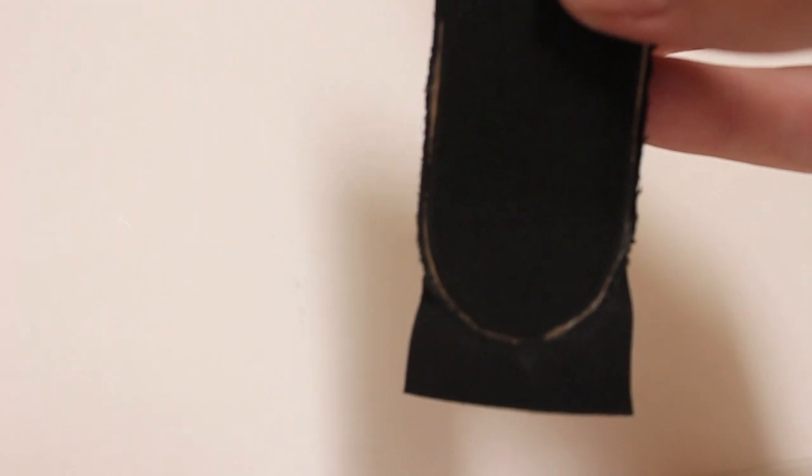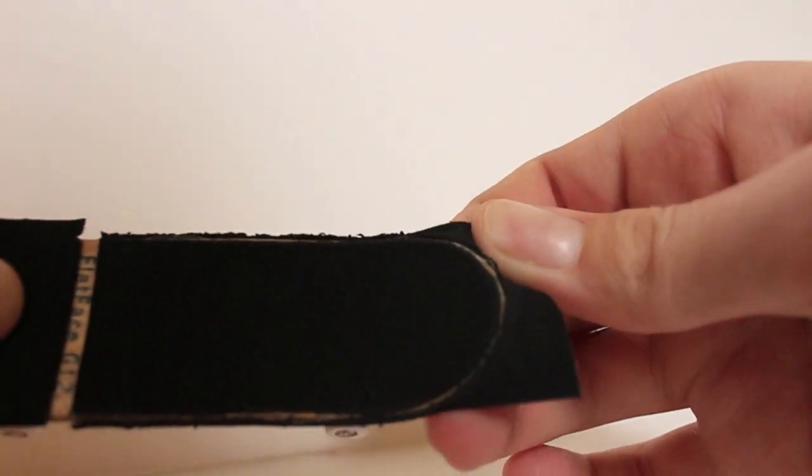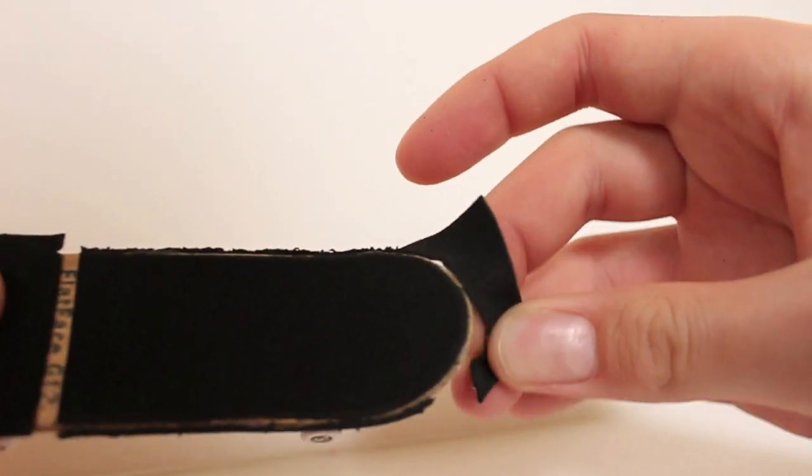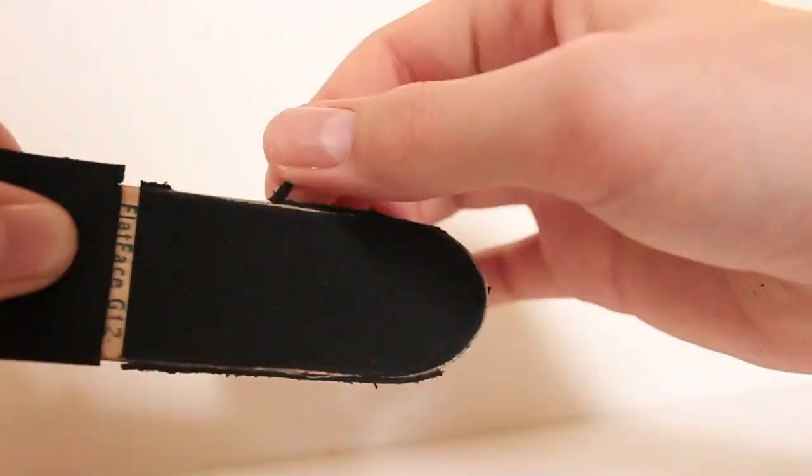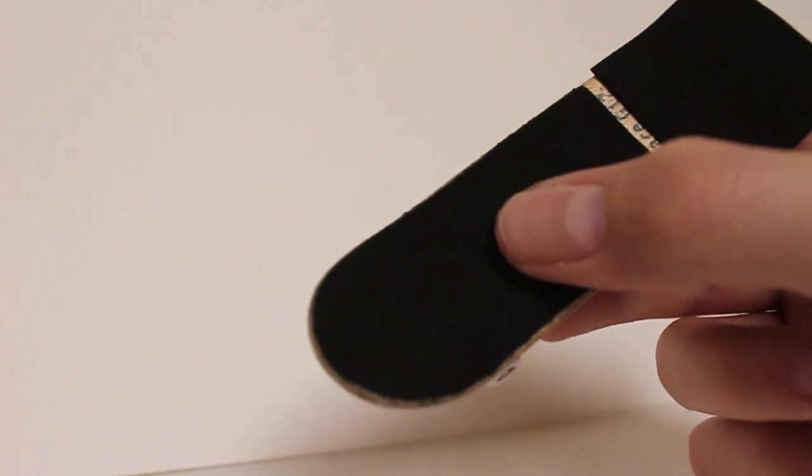Once you're done, it should look something like this. Now, gently peel away the fingerboard grip tape, revealing the fingerboard. It should look something like this.